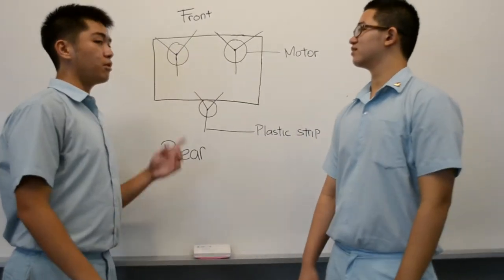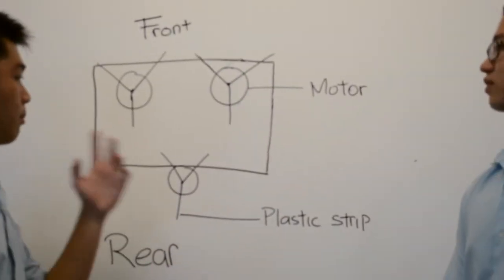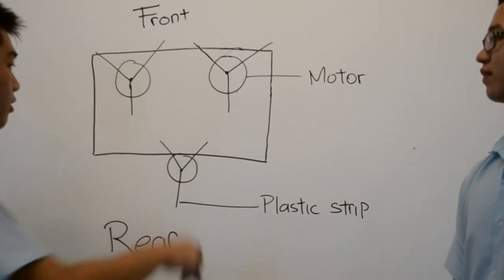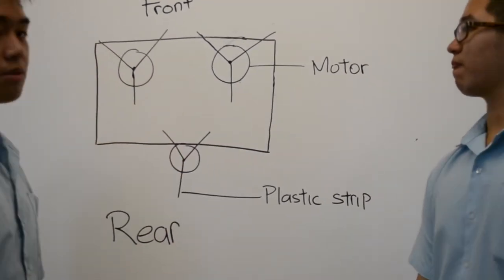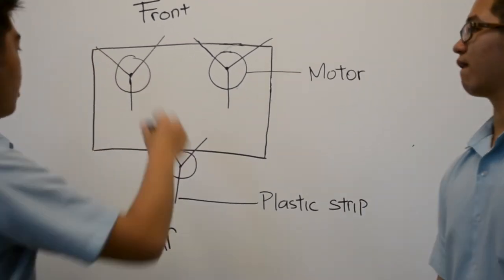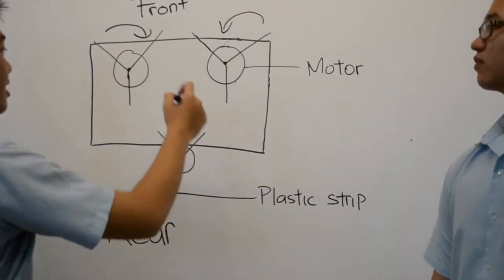As we are using DC motors for our project, we can control the rotation. For this project, we have these two motors that rotate inward. One will rotate this way and one will rotate this way. There might be a possibility that some grass will be left here, and the third motor here is used to cut down all these grass roots.